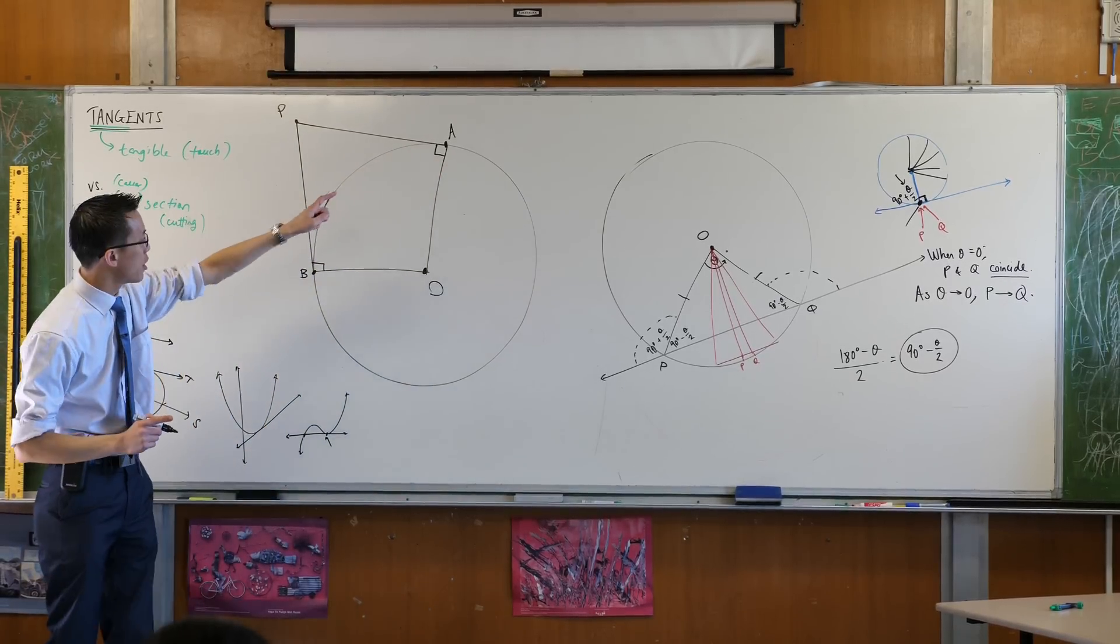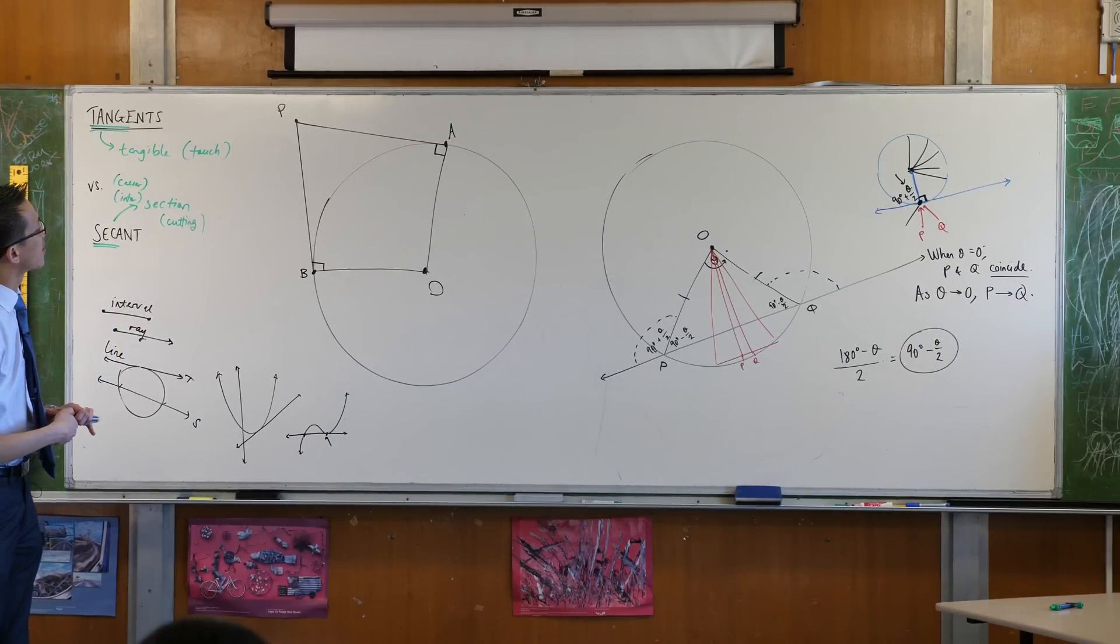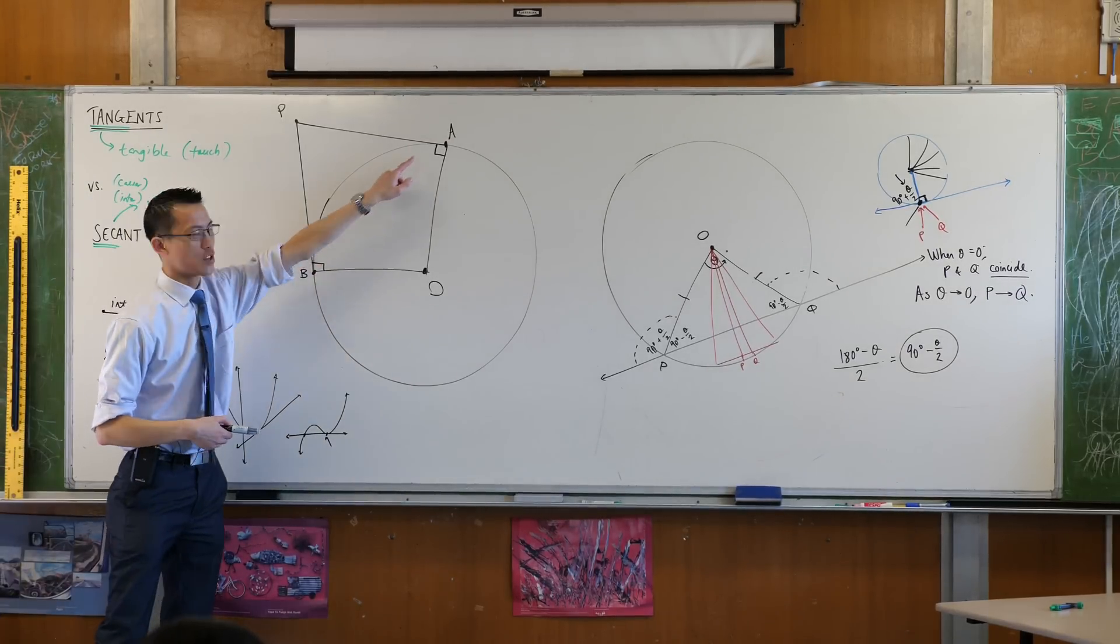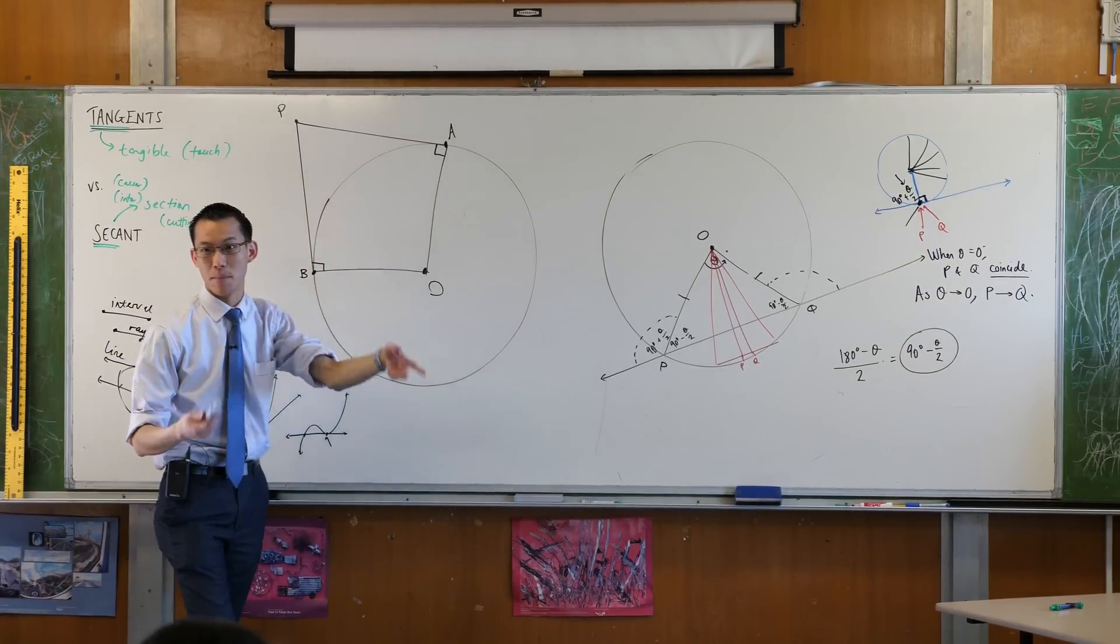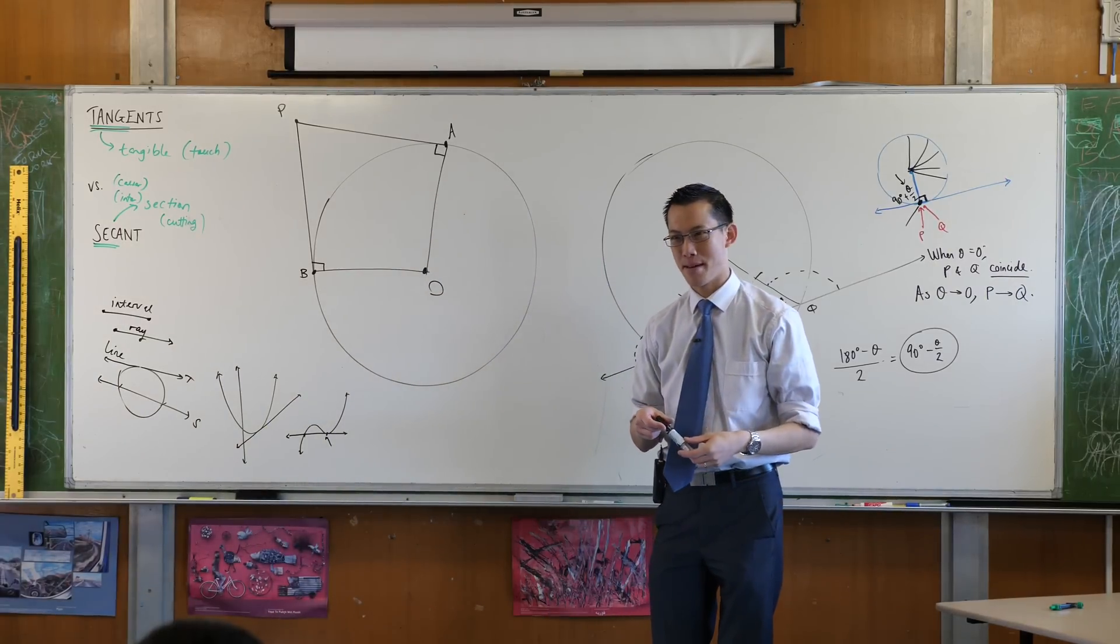So what can you tell me about O, A, P and B? What can you tell me about those points? If the opposite angles are both 90, the opposite angles are supplementary. What kinds of quadrilaterals have opposite angles that are supplementary?